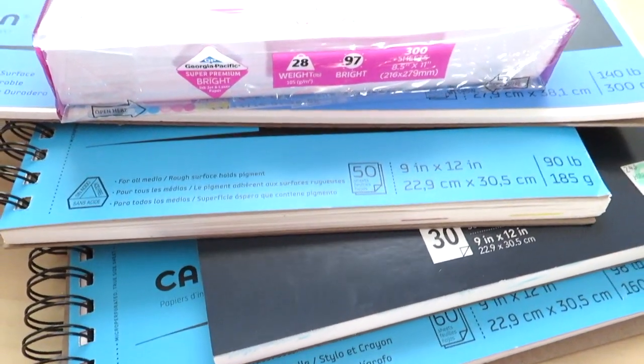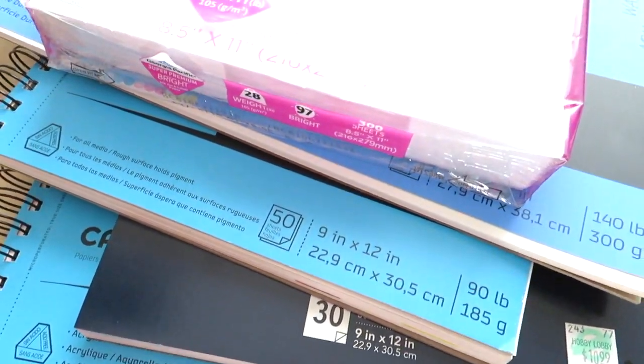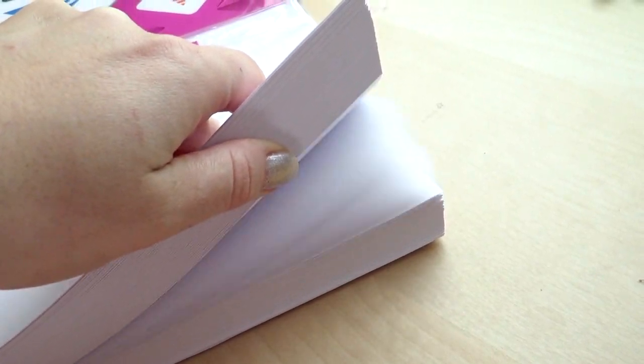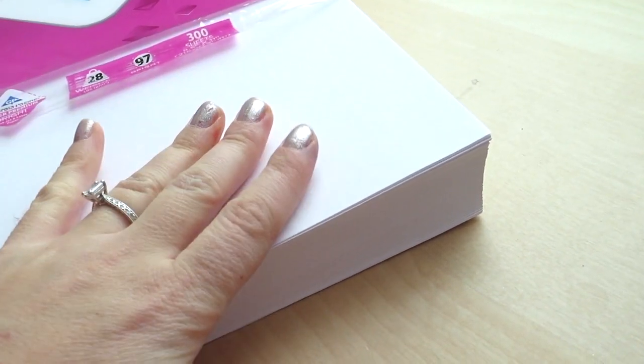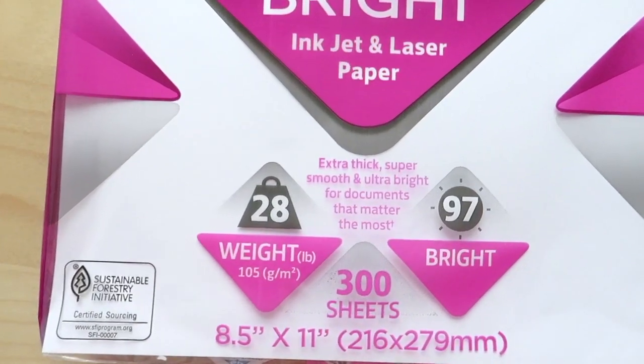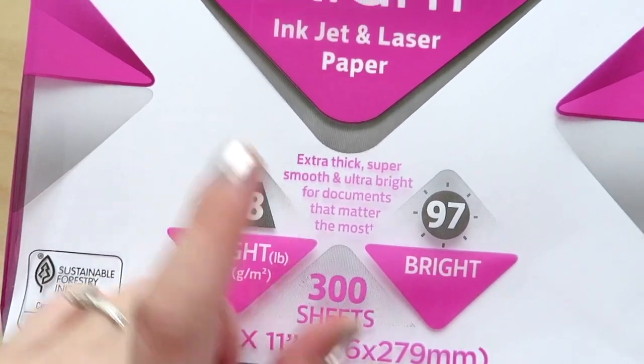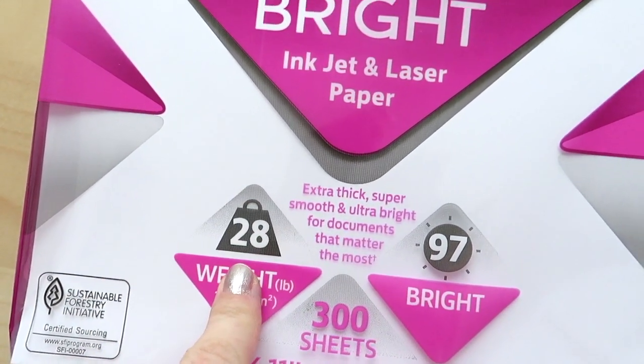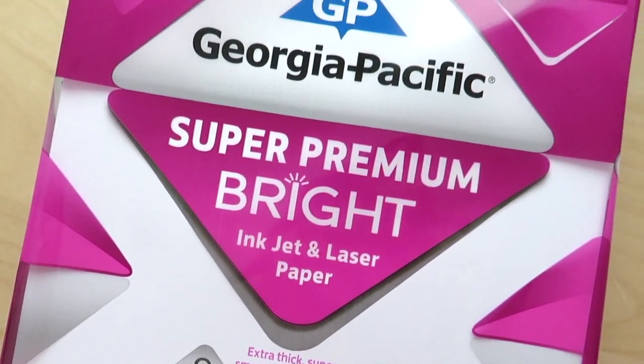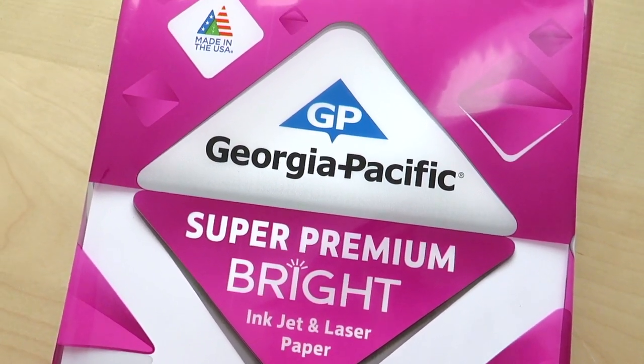Alright, so let's talk about paper. If you're just starting out and practicing strokes on letters, there is no need to waste good paper and money. Printer paper will do just fine. This is the one I use most of the time. It's a bit thicker than regular copy paper - it's 28 pounds instead of 20 pounds, but still cheap. I get these at Target.